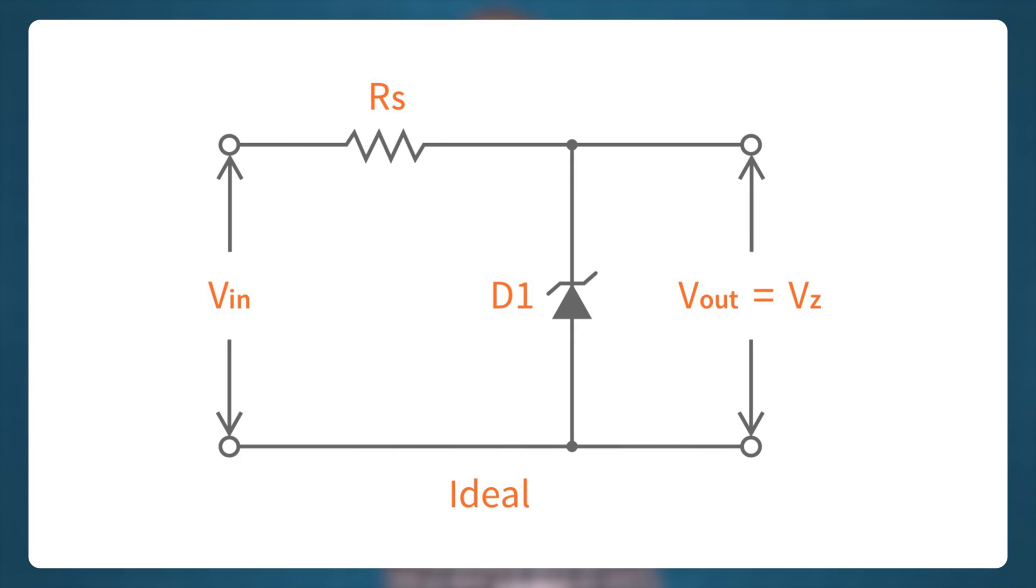Though Zener diodes are used as voltage regulators, they have a low efficiency for heavy load currents. It is because if the load current is large, there will be considerable power loss in the series limiting resistor R. When the power dissipated on R exceeds its power rating, this will eventually damage the resistor. This is a common problem of a Zener diode voltage regulator.